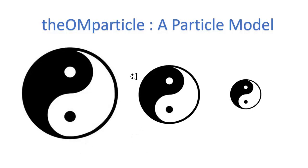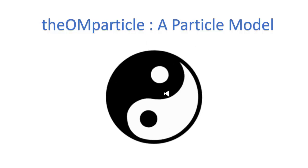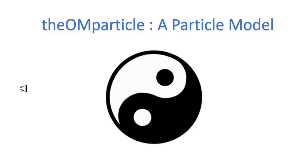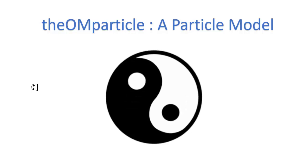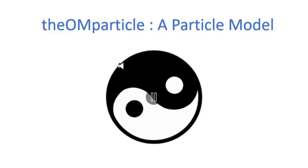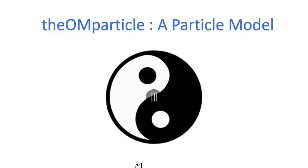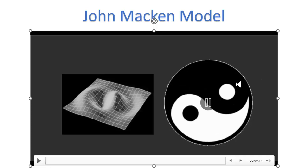This is a scalable model in the fractal sense. So if this is the model of an electron, this could be the model of a proton, and this could be the model of some other unknown particle, maybe associated with dark matter, that exists in nature. The yin-yang symbol depicts a spin of some sort. We can assume this is a spinning model, spinning at a certain frequency, and as I talked about in other videos, this outer perimeter is associated with the Compton wavelength of the particle.